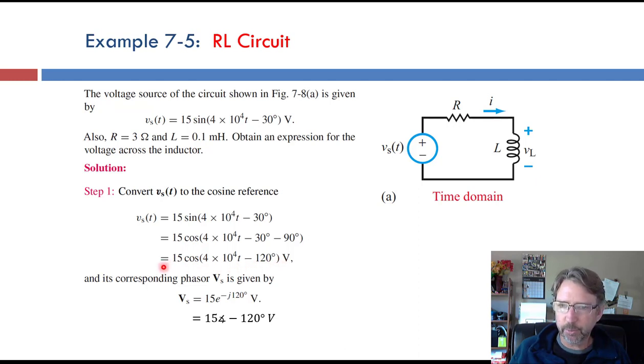But we want to put that in the phasor domain. So we just look at the amplitude and the phase shift, and it's 15 with a phase shift of negative 120 degrees, either written out with this exponential form or the angle sign is a shortcut to write these two things down.